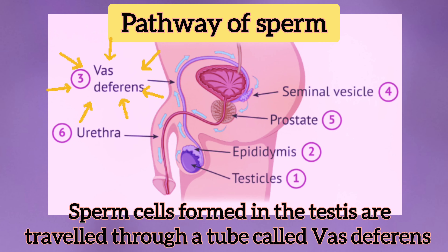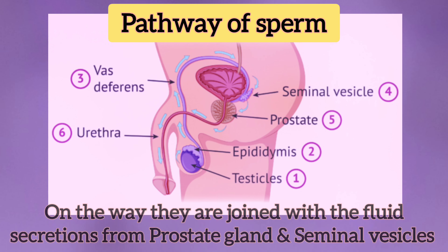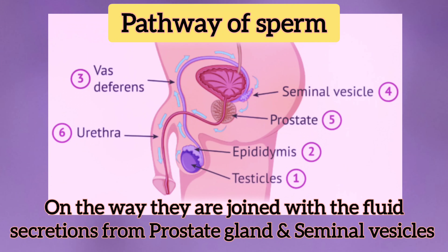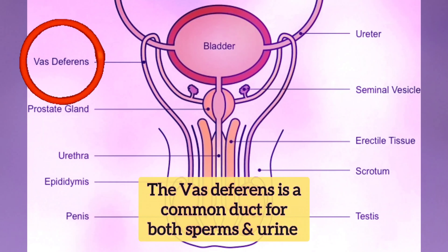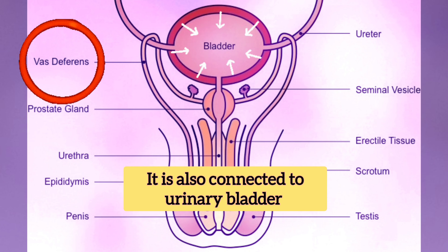On the way, the sperm cells are joined with fluid secretions from the prostate gland and seminal vesicles. The vas deferens is a common duct for both sperm and urine, and it is also connected to the urinary bladder.